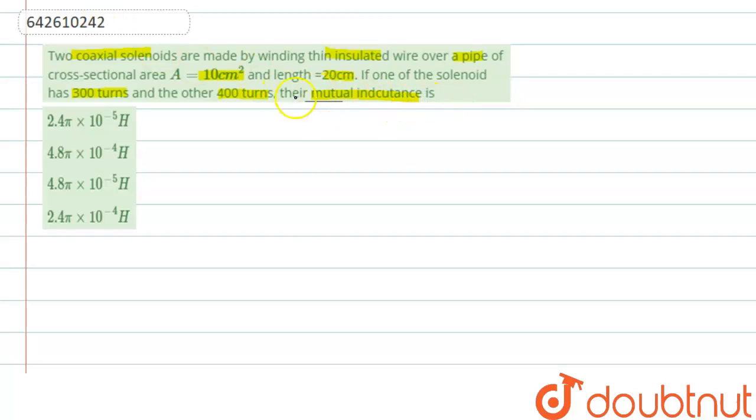So in this question, we have to find out mutual inductance. When we talk about mutual inductance, mutual inductance is directly proportional to the turns that is N1, N2 and the area. Whereas it is indirectly proportional to the length.